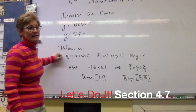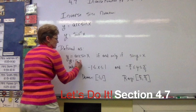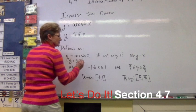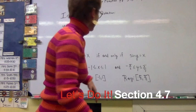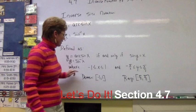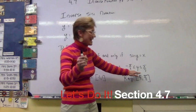How is that inverse sine function defined? It's defined as y equals arc sine of x, or y equals sine inverse of x, if and only if sine of y equals x. There are some parameters: x is between negative one and one, the value of sine is between negative one and one, and y — which is our angle — is between negative pi over two and pi over two.